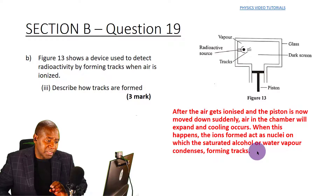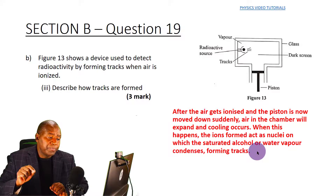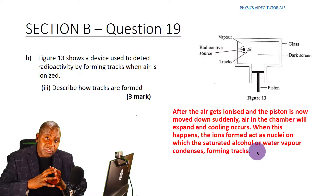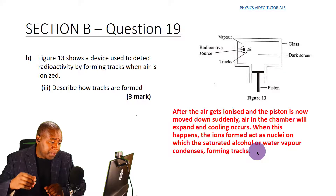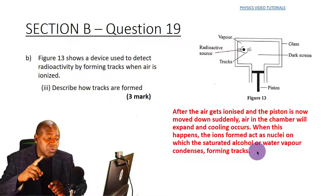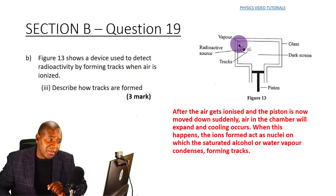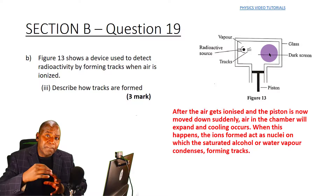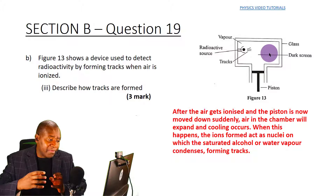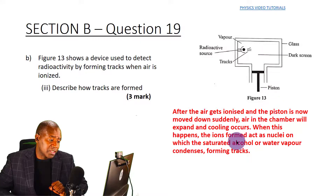To summarize the key points: after the air gets ionized and the piston moves down suddenly, the air in the chamber expands and cooling occurs. The ions formed act as nuclei on which the saturated alcohol or water vapor condenses. This water vapor or alcohol vapor condenses around the charged air molecules, rendering them visible so their tracks can clearly be seen.